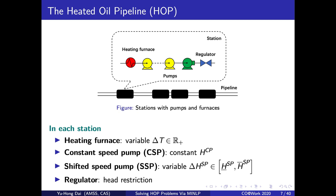In each station of the HOP, the heating furnaces provide variable temperature rise. And pumps, including constant speed pumps, provide constant head, and shifted speed pumps provide variable and lower-bounded head. There is also a regulator in the station to guarantee the outlet head is safe for the transport in pipes.